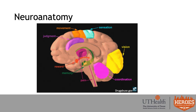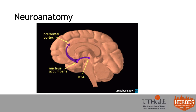Looking at basic neuroanatomy: if we were to slice the brain in half, we'd see regions responsible for movement, sensation, vision, and coordination. When talking about the disease of addiction, we're specifically talking about the reward pathway — including the nucleus accumbens and the VTA — where the reward system operates and where addiction most impacts the brain physiologically.